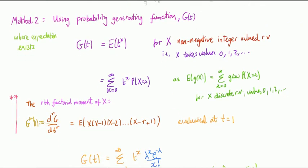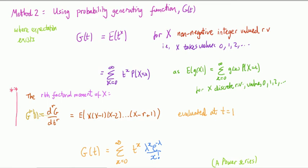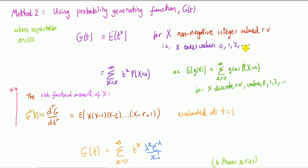Here's Method 2, using the probability generating function. Let's call it G(t), defined as the expectation of t to the power of x. This is another type of generating function — similar to the moment generating function, but more restrictive: it applies for x which are non-negative integer-valued random variables, taking values 0, 1, 2, and so on.